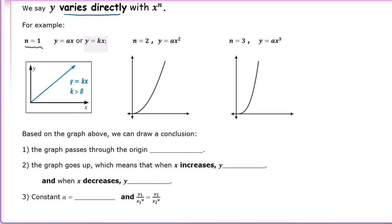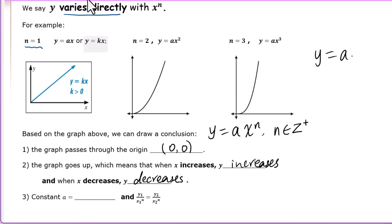From these three graphs, we can draw the following conclusions for y equals a times x to the nth power, where n is a positive integer. The graph passes through the origin (0, 0). The graph goes up, which means when x increases, y increases, and when x decreases, y decreases. Dividing both sides by x to the nth power gives a equals y over x to the nth power. Also, y1 over x1 to the nth power equals y2 over x2 to the nth power.